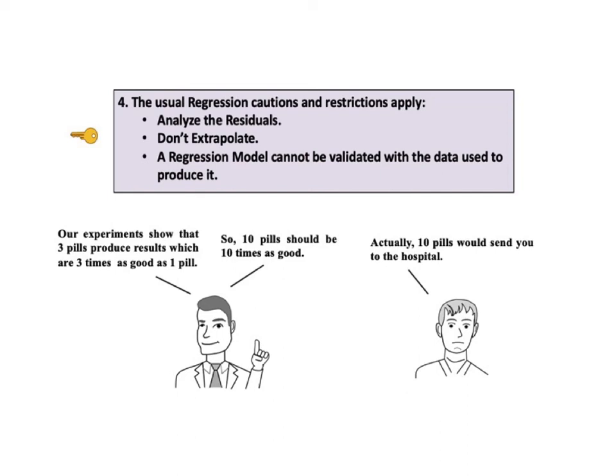Second, as explained in the regression part 3 video, don't extrapolate your conclusions beyond the range of the data. This cartoon illustrates that danger. If we collected data on the results from 0 to 3 pills, we cannot make any conclusions on the results from more than 3 pills.